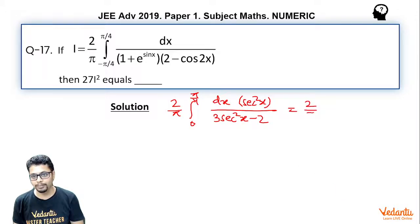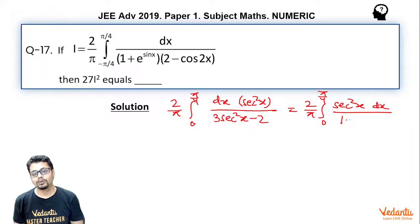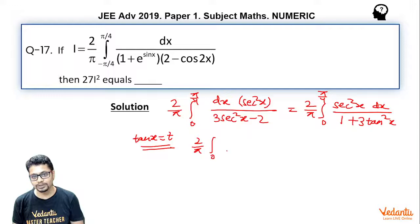We rewrite the denominator: 3sec²x − 2 = 3(1 + tan²x) − 2 = 1 + 3tan²x. Now letting t = tan x, we get sec²x dx = dt. The limits change from 0 to 1, giving I = 2/π ∫₀¹ dt/(1 + 3t²).